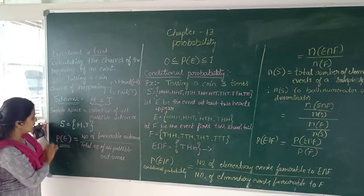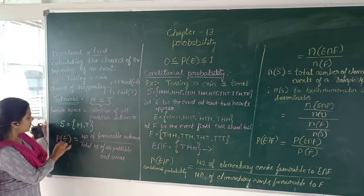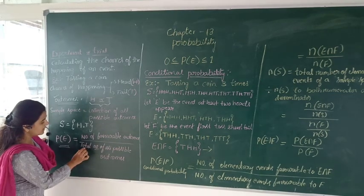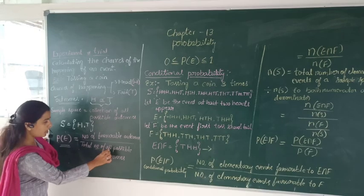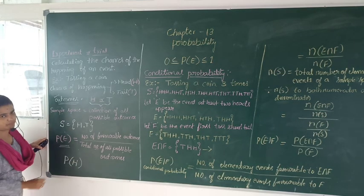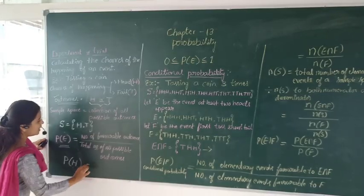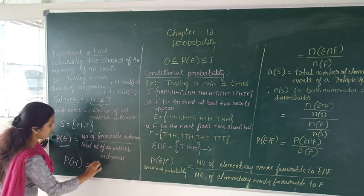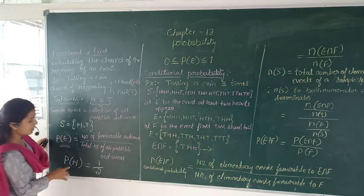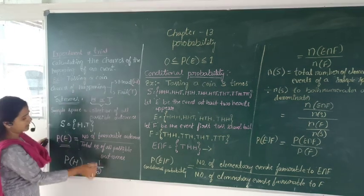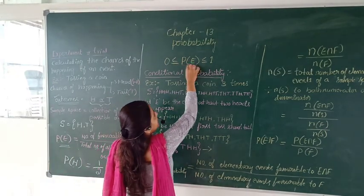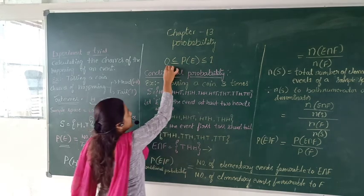Now let's come to the definition of probability. The formula is: the probability of an event equals the number of favorable outcomes divided by the total number of all possible outcomes. So if I take the probability of head, the favorable outcome is head — only one head exists. And total number of outcomes is two. So the probability of head after tossing a coin is one divided by two. The value of any probability of an event lies between zero and one.